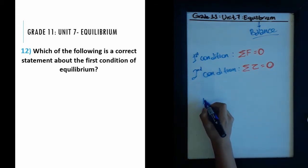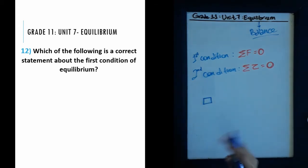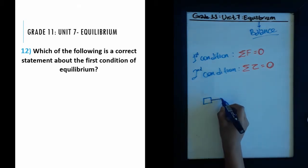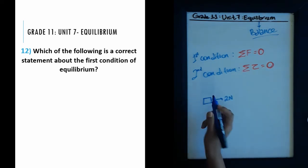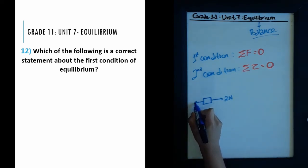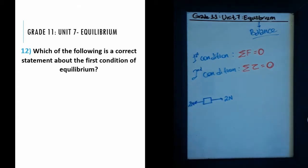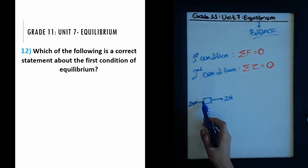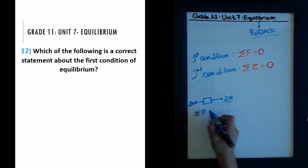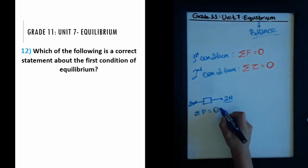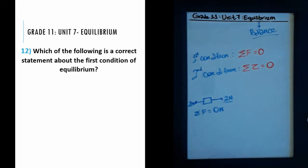To see this graphically: if we have some object and something pulls it one way with a force of 2 Newtons, and something pulls it the other way also with 2 Newtons, this body is in equilibrium. Those forces cancel out — the forces themselves aren't zero, but the summation of the forces equals zero Newtons, which satisfies the first condition.